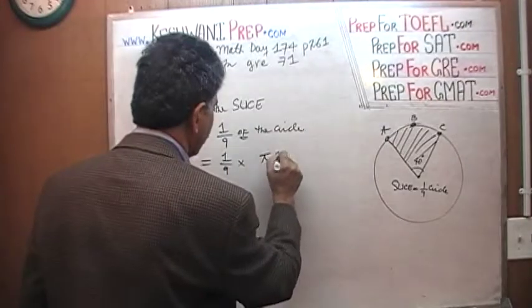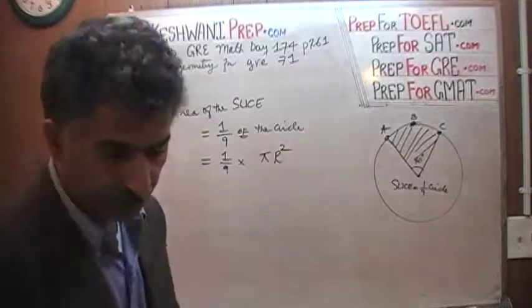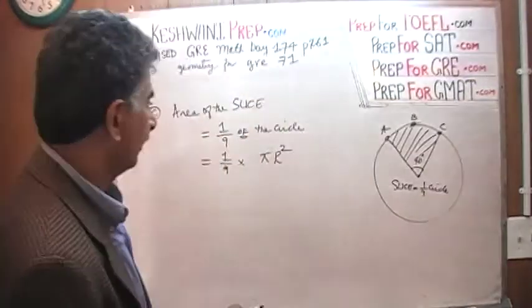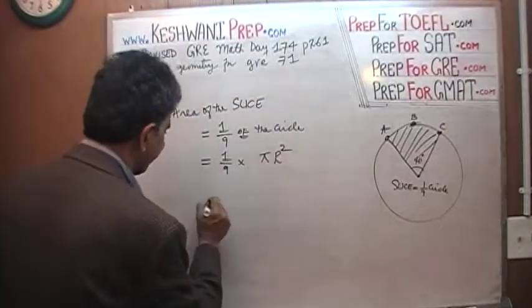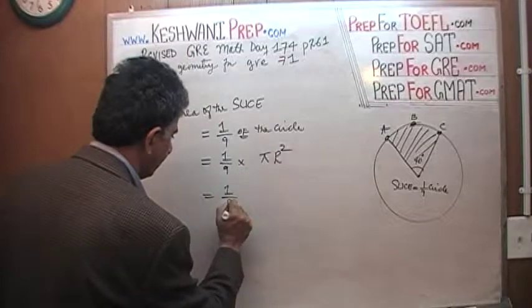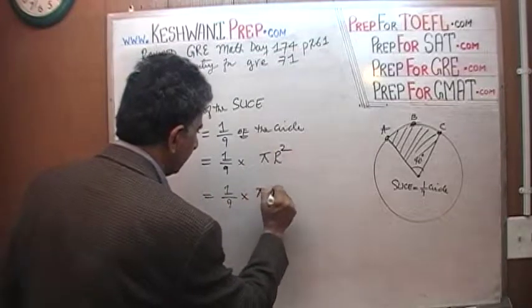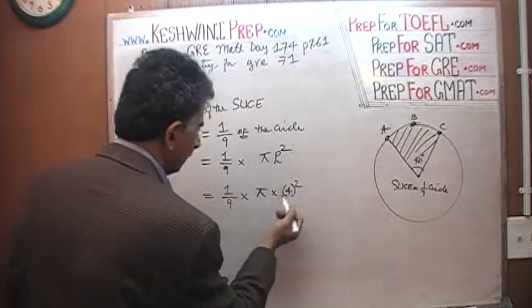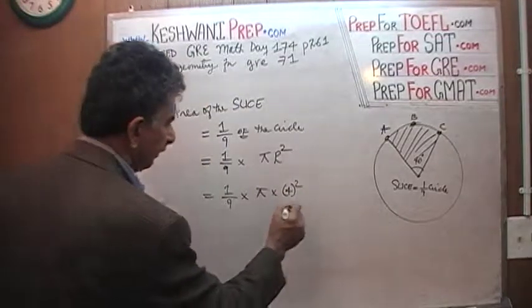And the area of the circle is simply πr². r² in our case would be 4² because the radius is 4. So 1/9 times π times 4². 4² is 16, so you get 16 over 9.